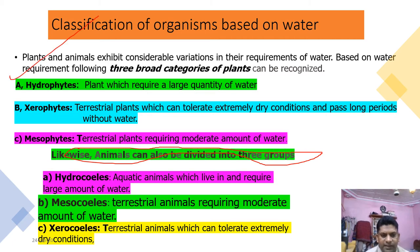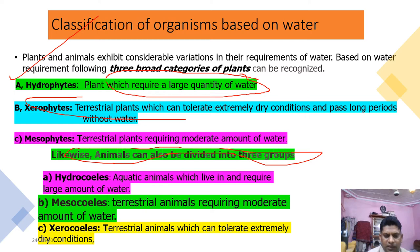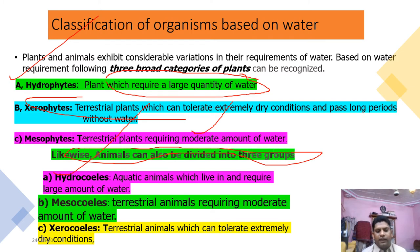The first category for plants is hydrophytes — water plants — which require a large quantity of water. Xerophytes are plants which can tolerate extremely dry conditions and survive a long time without water. Mesophytes are intermediate plants requiring a moderate amount of water. Similarly for animals: hydroseals are aquatic animals requiring large amounts of water, mesoseals are terrestrial animals requiring moderate quantities, and zeroseals can tolerate extremely dry conditions.